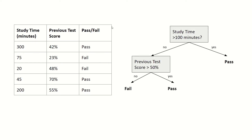Here is an example. First we check: do they have a study time larger than 100 minutes? If yes, they pass — that's the first and last student here. If not, we check: do they have a previous test score larger than 50%? If yes they pass, and if no they fail. So we have one student with a previous test score larger than 50% and a study time less than 100 minutes, and so they pass. And we have two students with a study time less than 100 minutes and a previous test score less than 50%, and so they both fail.